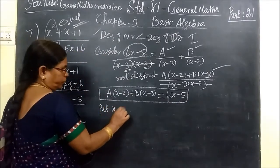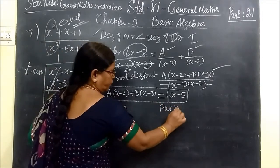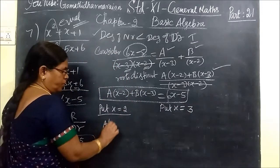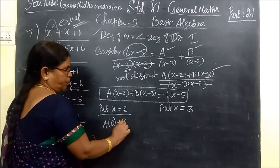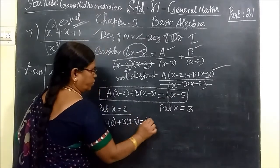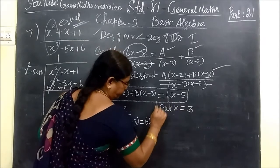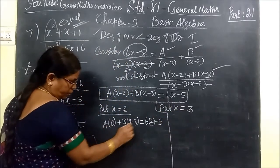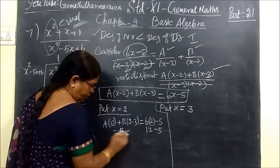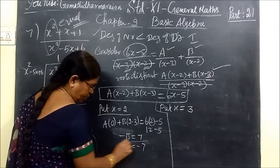Now you write put x equal to minus root, plus 2. Put x equal to plus 2, opposite sign. So this will be 0. Then plus B bracket, 2 minus 3, equal to, for this you substitute 6 times 2 minus 5. This is 0, so minus B equal to 12 minus 5. So minus B equal to 7, so B equal to minus 7.